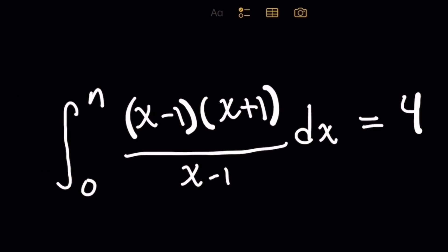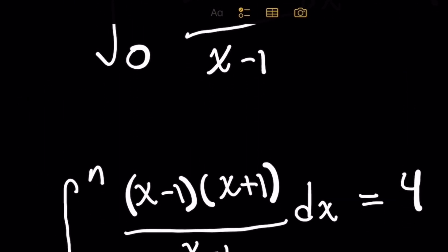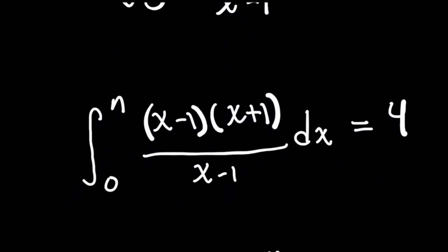The first thing I want you to notice is the numerator x squared minus 1 easily factors to x minus 1 times x plus 1. And when you look at this integral now, you'll recognize you have x minus 1 on top and bottom, so let's go ahead and cancel those out.